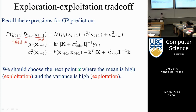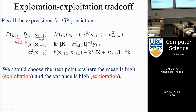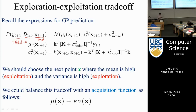All we need in order to trade off exploration and exploitation is this mean and variance. Where the mean is high, for maximization, you're likely to do well. You're also likely to do well where the variance is large — those are areas that are barely explored and likely to be profitable. One way to balance this trade-off is an acquisition function defined as the mean plus a constant kappa times the variance.